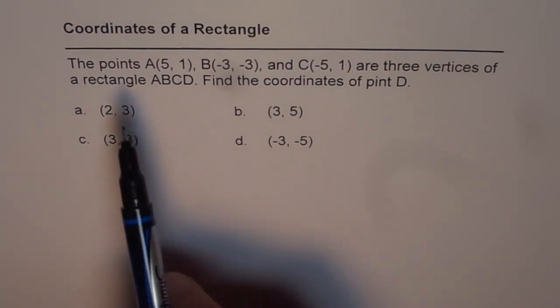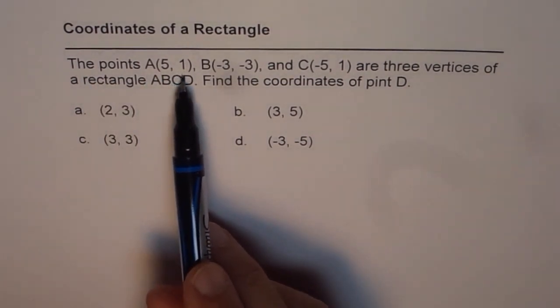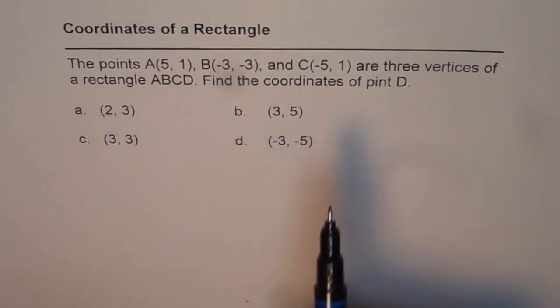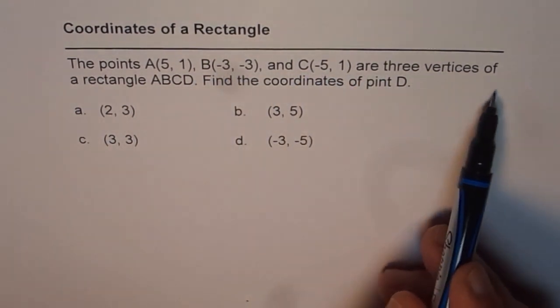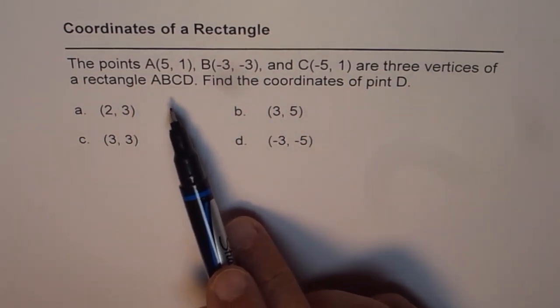The question is, the points A(5,1), B(-3,-3), and C(-5,1) are three vertices of a rectangle ABCD.